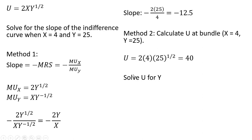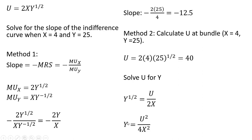The next step is we take this utility function and solve it for y. Moving some things around, dividing through by 2x, and now squaring both sides to get rid of this y to the one-half power. So now we square both sides, and y equals u squared divided by 4x squared, squaring everything in the denominator.